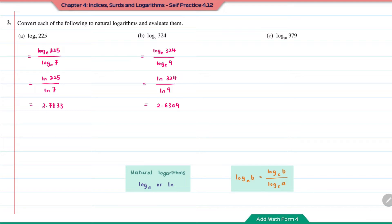Question C: log base 20 of 3 to the power of 5. This will be log base E of 3 to the power of 5 over log base E of 20, or LN of 3 to the power of 5 over LN 20. This gives the answer of 1.9820.